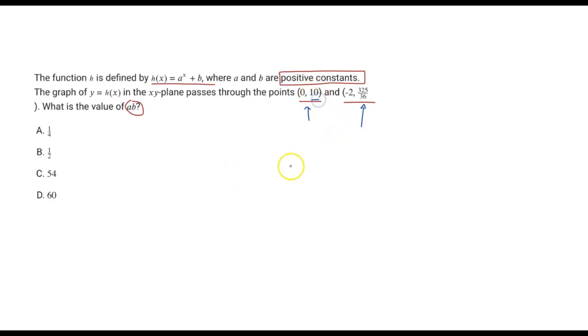It says that with the input of 0, so x equals 0, we're going to get an output of 10. Let's see, so a to the power of 0 is going to give us 1, so here we have 1.